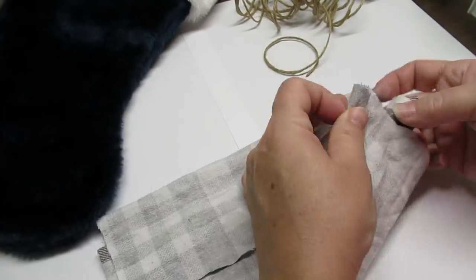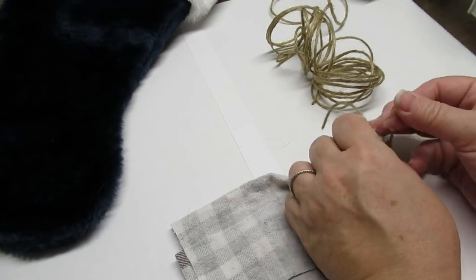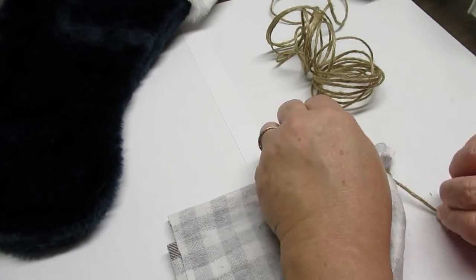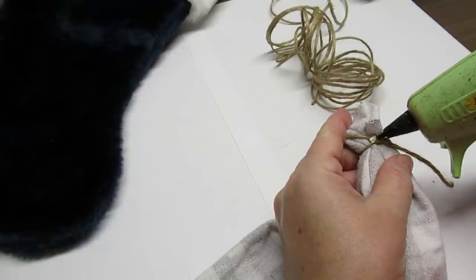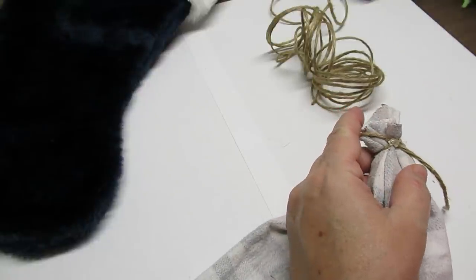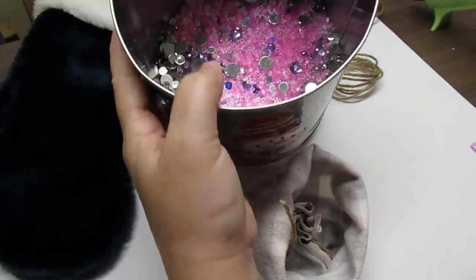I've turned it inside out and you can see here that I'm just going to gather one of the ends and I'm going to use a piece of jute string just to tie it off. A dab of hot glue on the knot will make sure that it doesn't unravel.